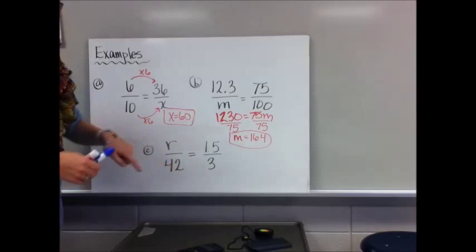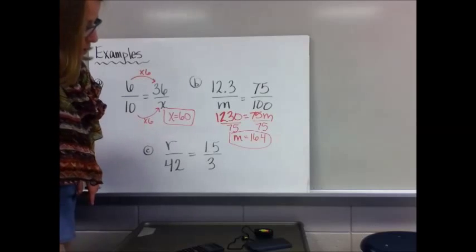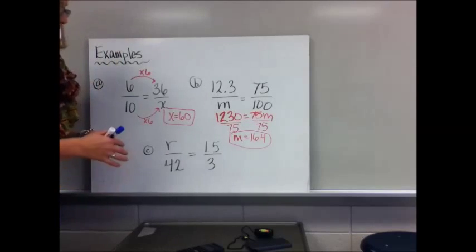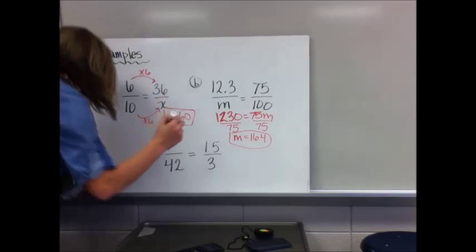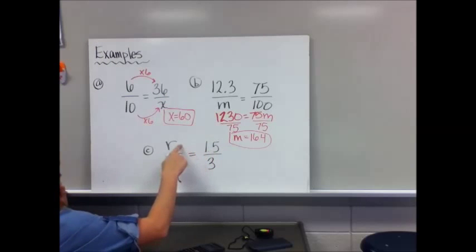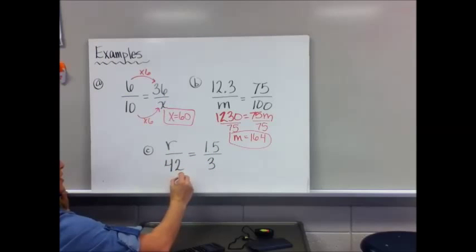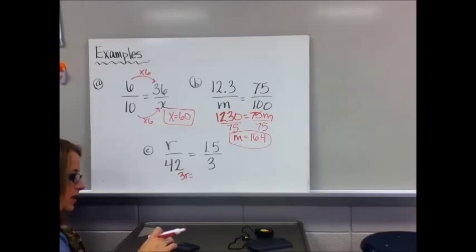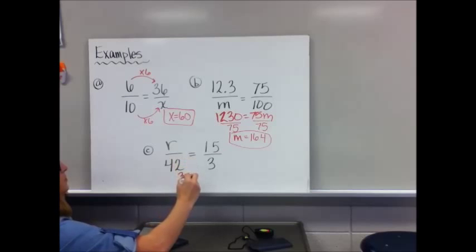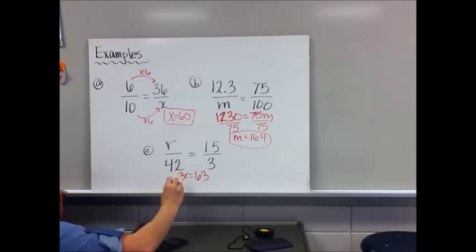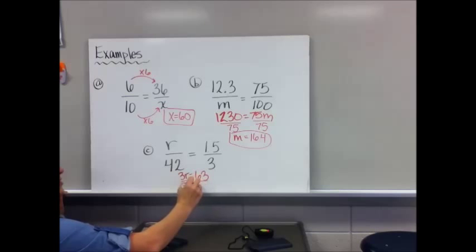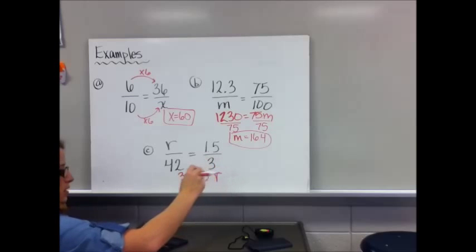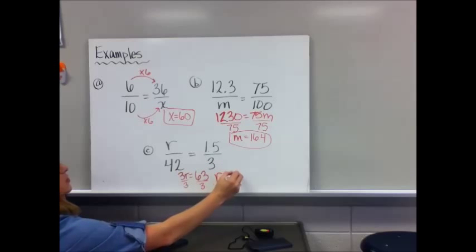For the next example, to go from 3 to 42 there is a whole number, but it may not come to mind immediately. So we cross-multiply: 3 times R is 3R, and 42 times 1½ is 63. Then divide both sides by 3, and R equals 21.